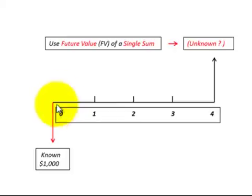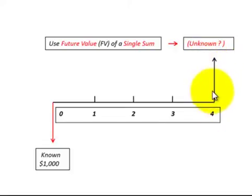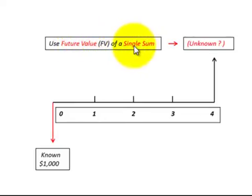The next cash flow diagram: we have a known value at the beginning and need to determine what that future value is at the end. In this case, we'd use a future value function or future value single sum table.